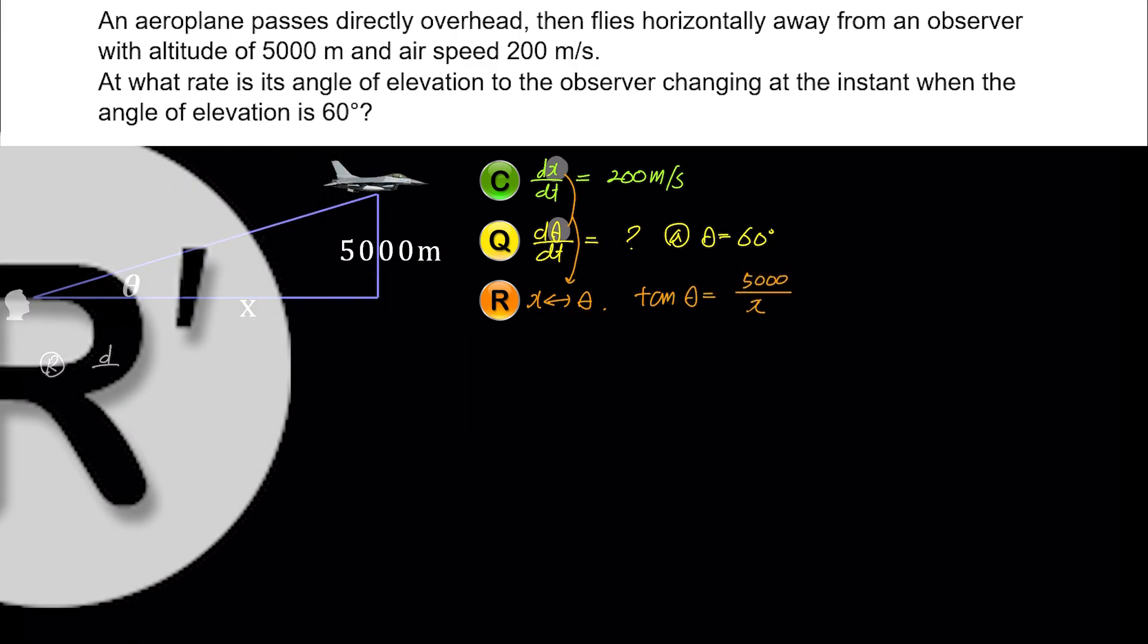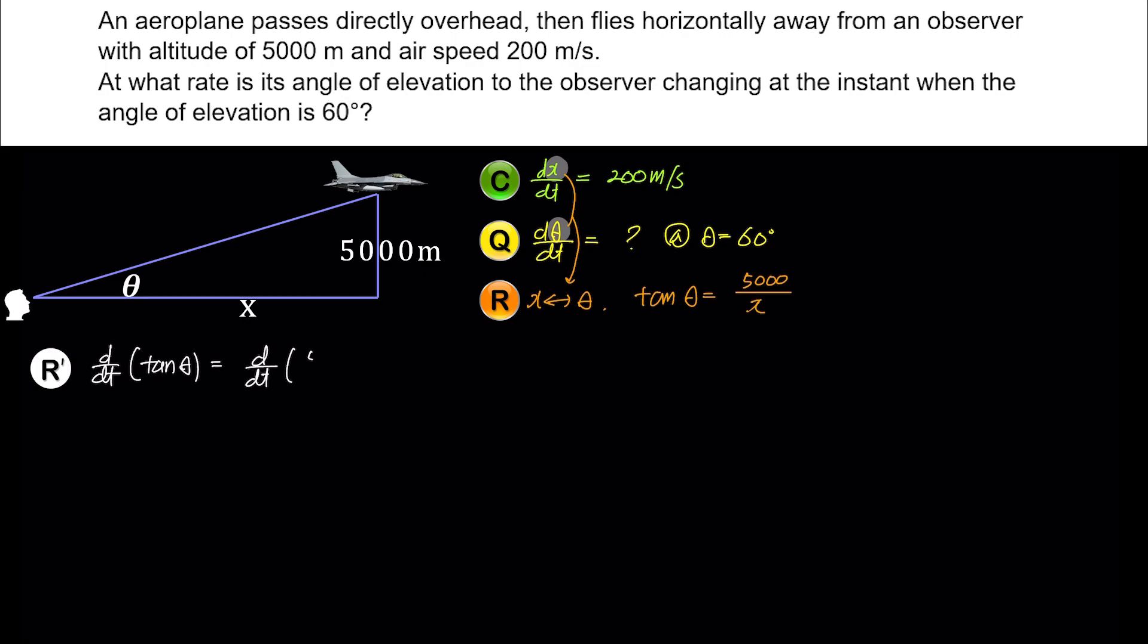Now we move on to the last step, which is the time differentiation of the relation. For those who find implicit differentiation difficult, I'll make a separate video explaining it in an easy to understand manner and upload it soon. We'll move the constant 5000 to the left-hand side, which is not affected by the differentiation, and write 1/x as x to the power of negative 1.